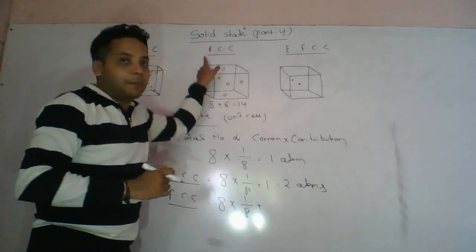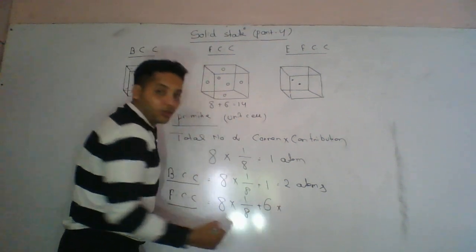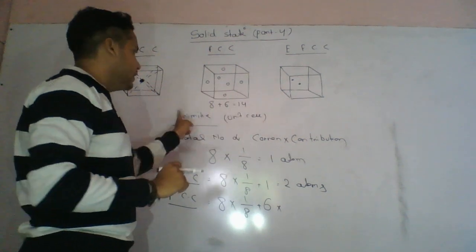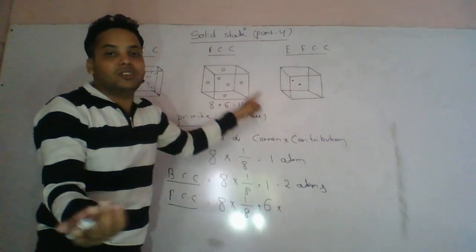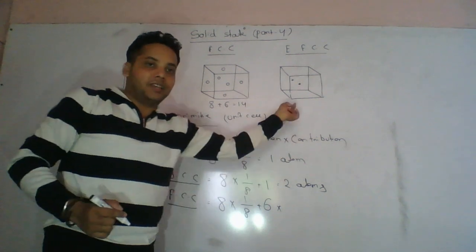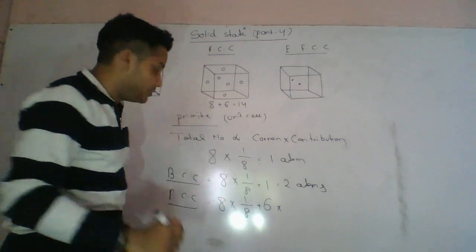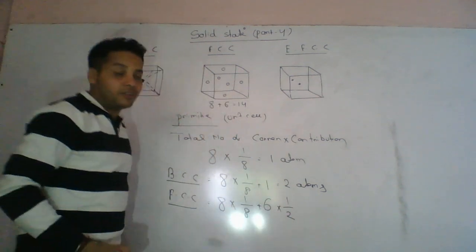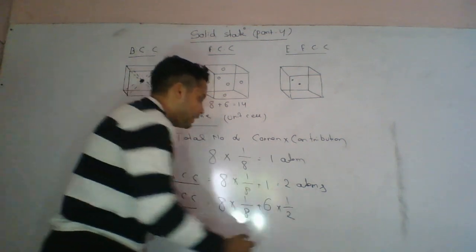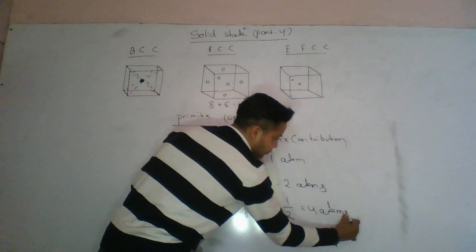Now we write FCC: 6 into contribution. The atom count for FCC is 4 atoms. 8 into 1/8, plus 6 into 1/2 gives 4 atoms.